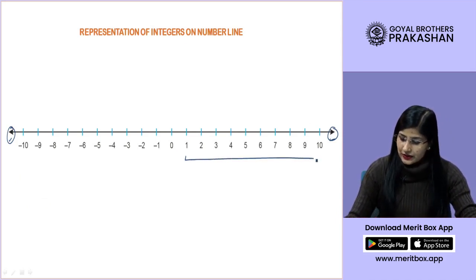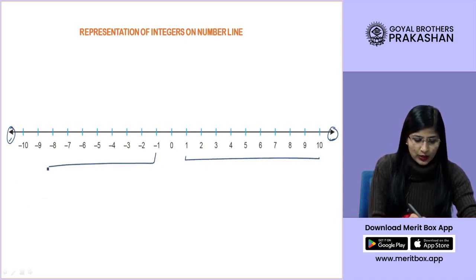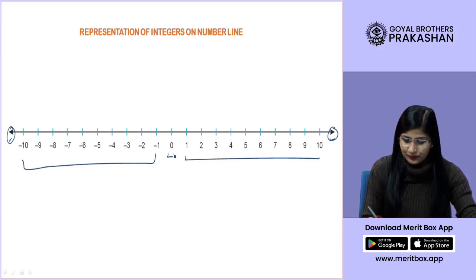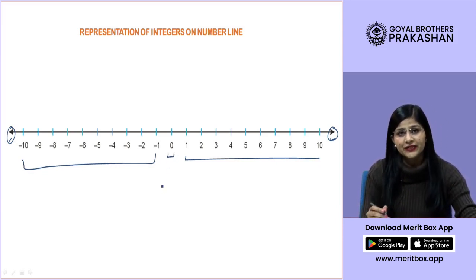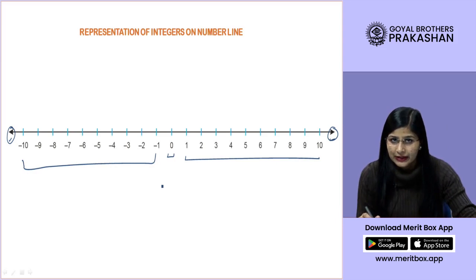These are the positive ones, these are the negative ones and this is 0. This way, we can represent every integer on the number line.